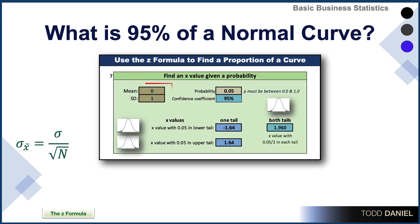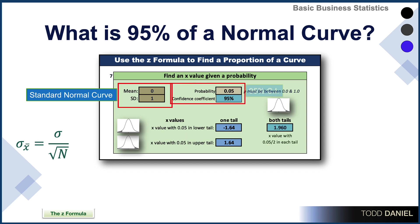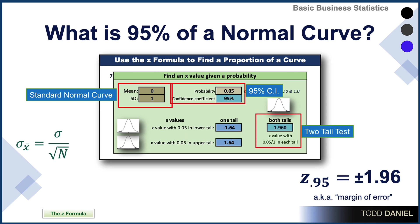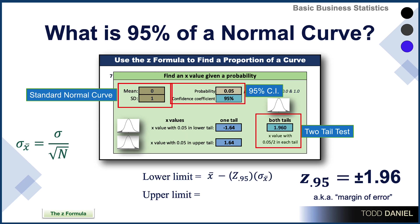What is 95% of a normal curve? Using a standard normal distribution with a mean of 0 and a standard deviation of 1, a probability of .05 gives us the confidence interval of 95%. We can see that the proportion in both tails is defined by 1.96 standard deviations. To get the lower limit, we start with our sample mean and subtract 1.96 times the standard deviation. The upper limit comes the same way — start with the sample mean but add 1.96 times the standard deviation.